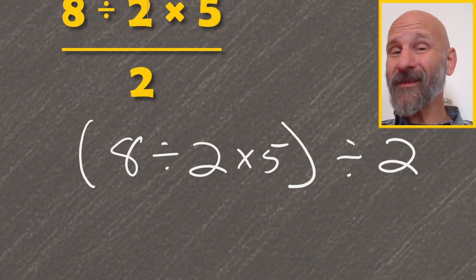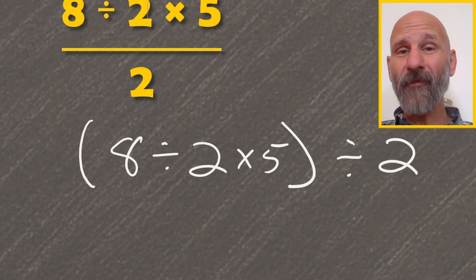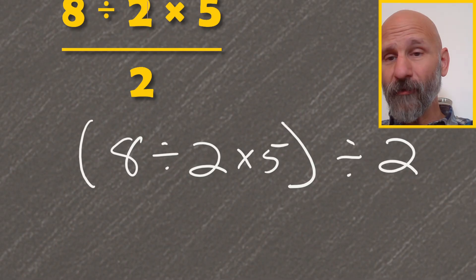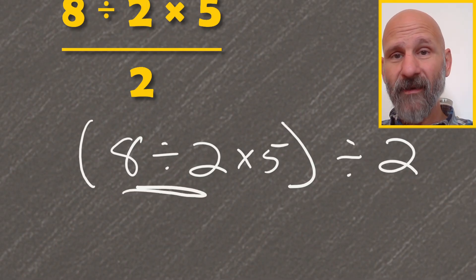We are going to go left to right. This is all multiply and divide. So when you're thinking like PEMDAS, right, we start with what's in the parentheses, and then the rest is all multiply, divide. So you have to go left to right. So the first step you're going to do is 8 divided by 2.